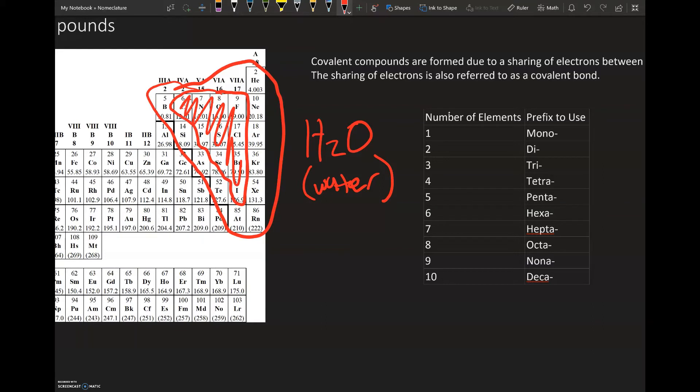What we do is we have to look at how many elements there are, and then each element has its own prefix. In the formula there are two hydrogens, and when we look at the table, we'll find that there is a prefix for two which is called di.